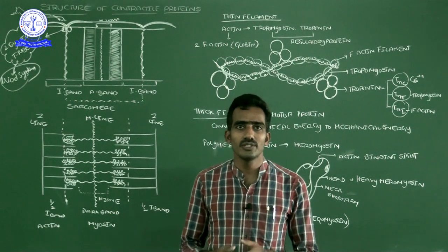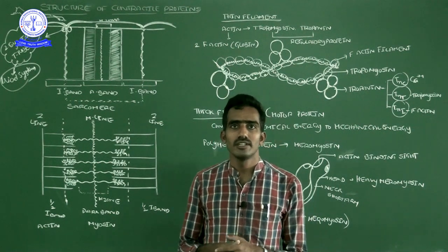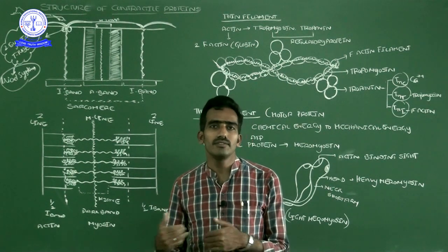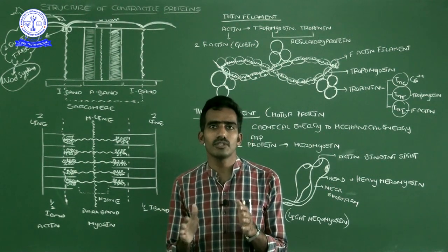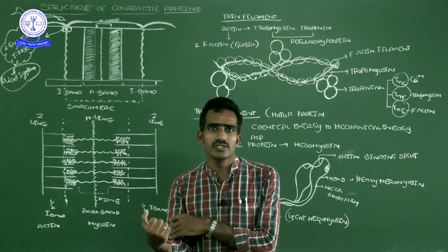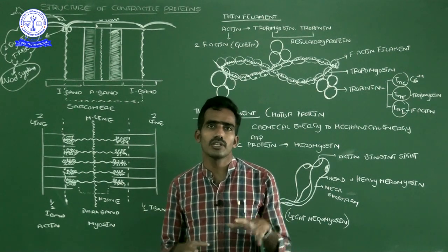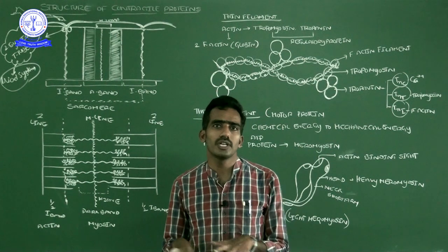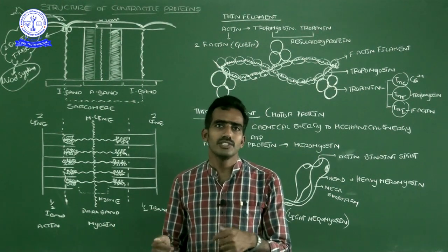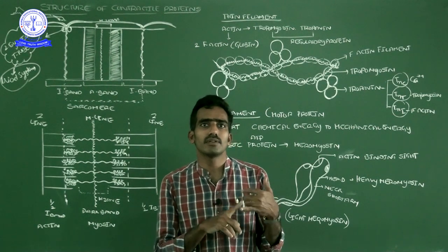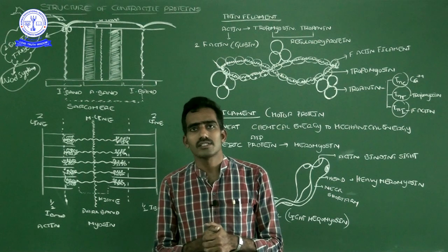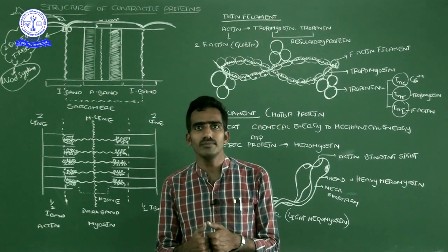In this video, I would like to explain about the structure of muscle proteins. In the previous videos, we started about the muscular system of the human body. Our muscular system plays an important role in locomotion and movement. In that chapter, we started learning about the muscular system and then the skeletal system. Later, we will start about the skeletal system.